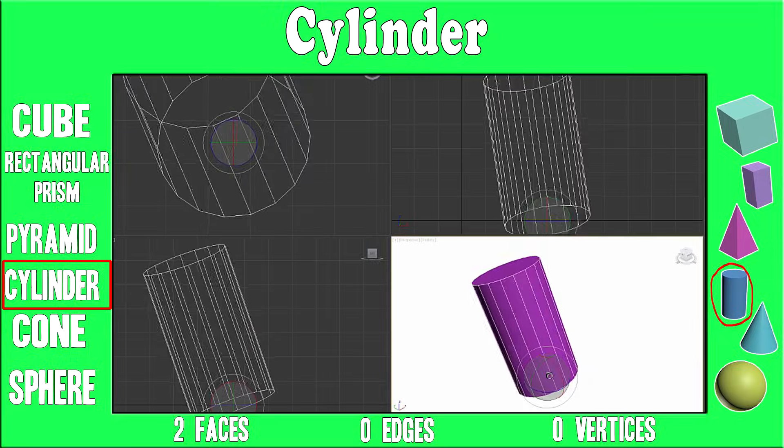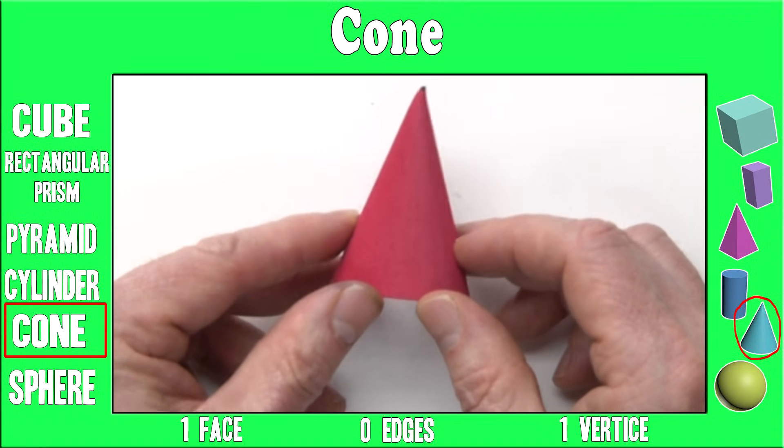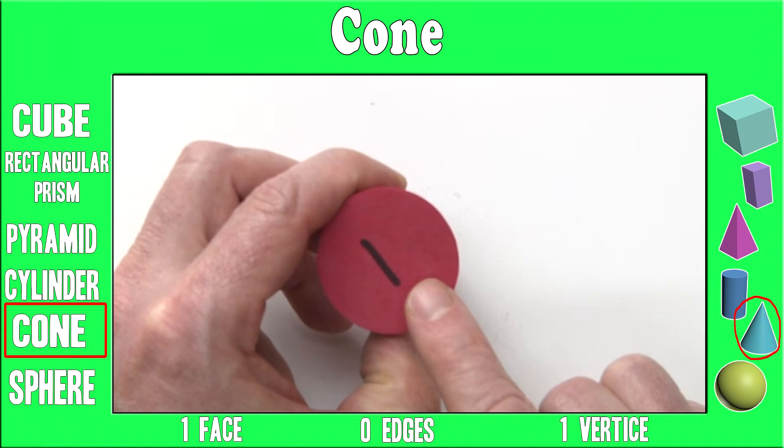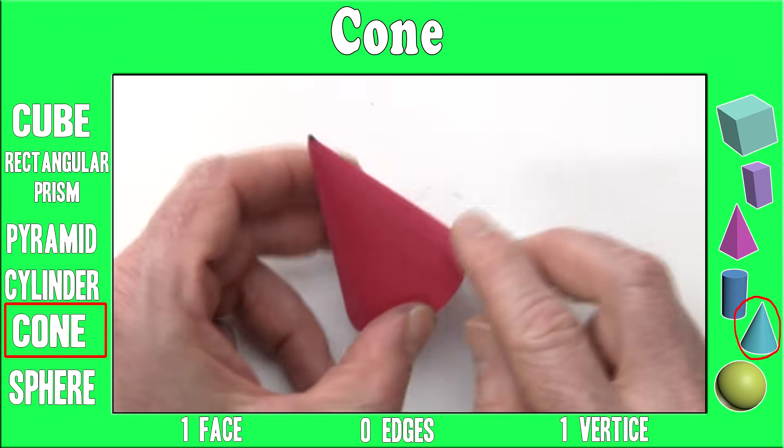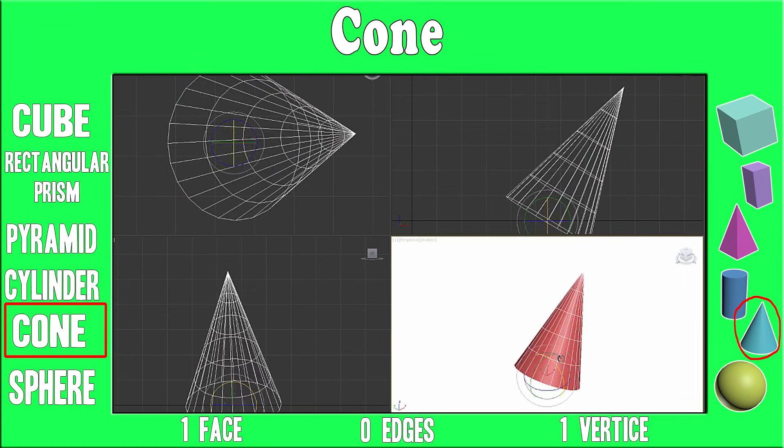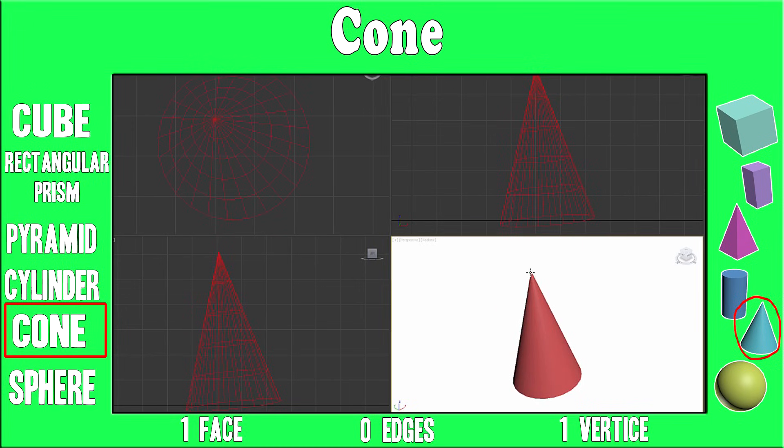A cone has one face, zero edges, and one vertices. A cone reminds me of an ice cream cone. Yummy!